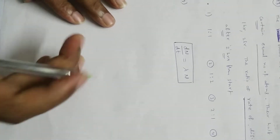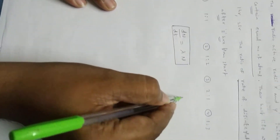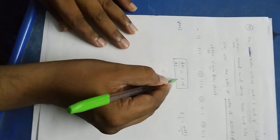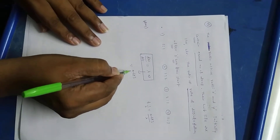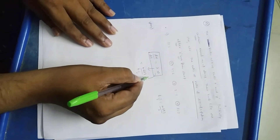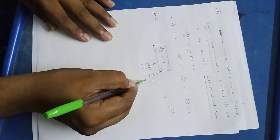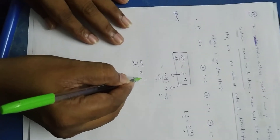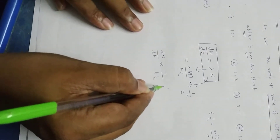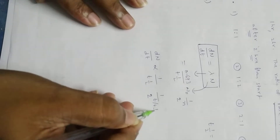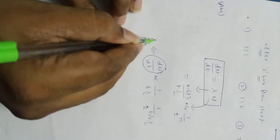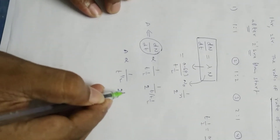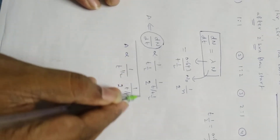Once again: dN by dt equal to lambda into N. What is the t half formula? t half is 0.693 by lambda, that means lambda writes as 0.693 by t half. We know the shortcut formula: N equals N naught times 1 by 2 power n, where n writes as t by t half. Here dN by dt, written as activity, is inversely proportional to t half times 2 power t by t half.